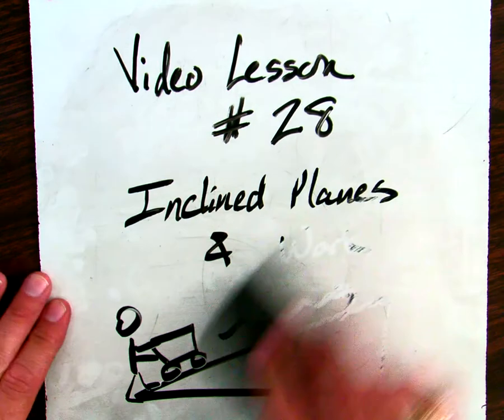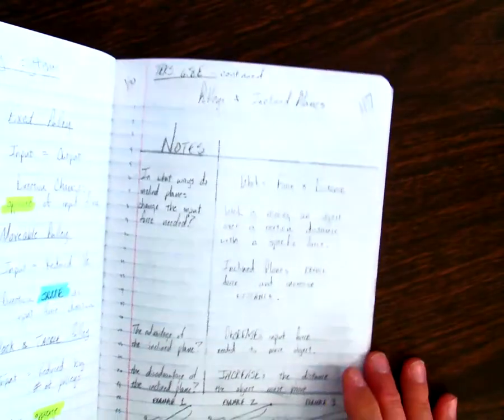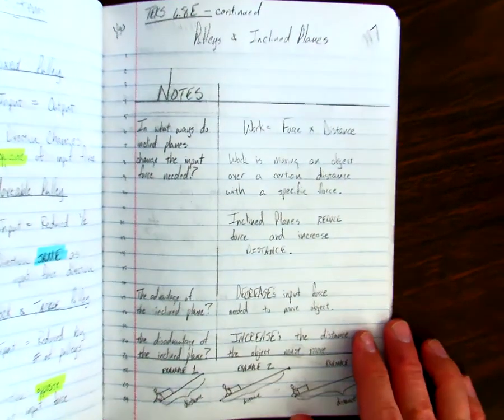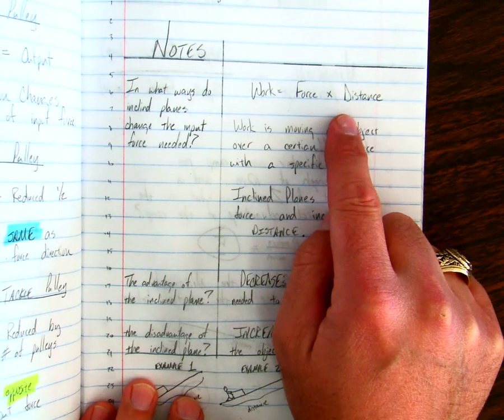So the first thing we're going to talk about is the notes that this follows, which these are on page 117. I'm going to zoom in here and show you something for just a second. We're going to focus here for a second on this formula, work equals force times distance.